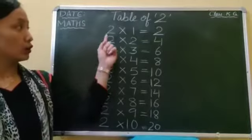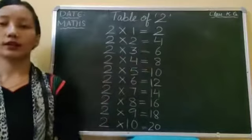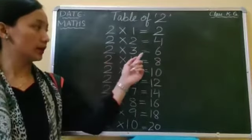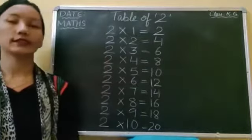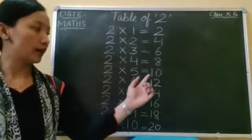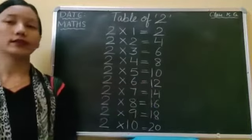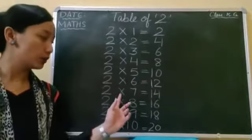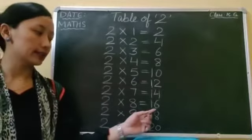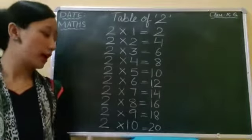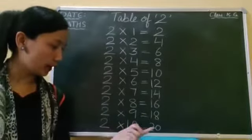Say: two ones are two, two twos are four, two threes are six, two fours are eight, two fives are ten, two sixes are twelve, two sevens are fourteen, two eights are sixteen, two nines are eighteen, two tens are twenty.